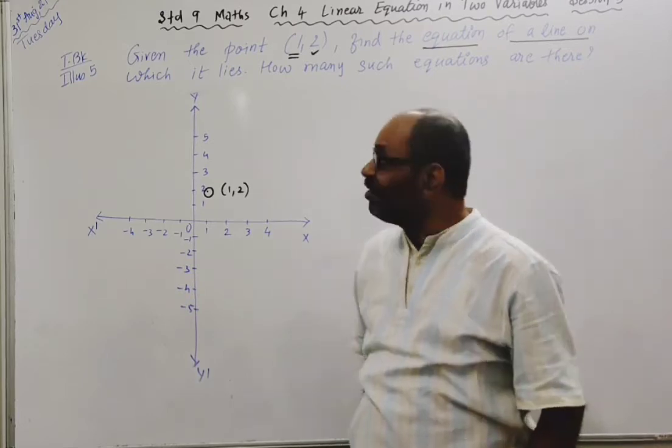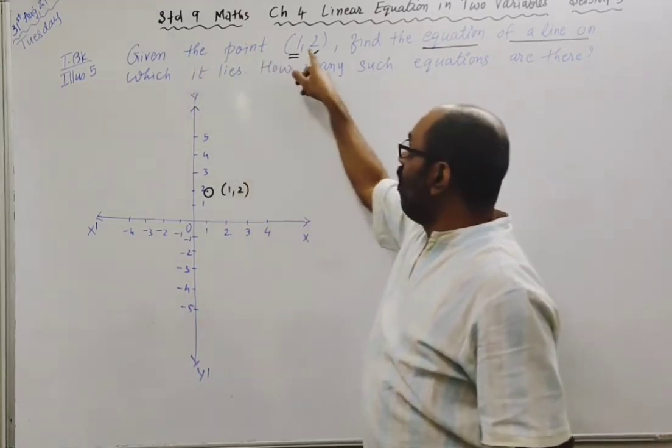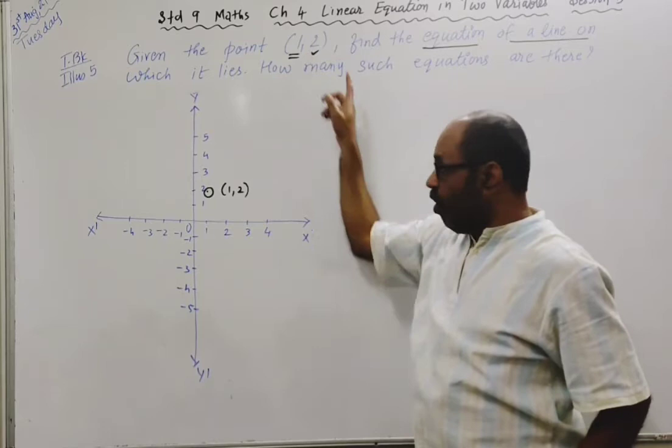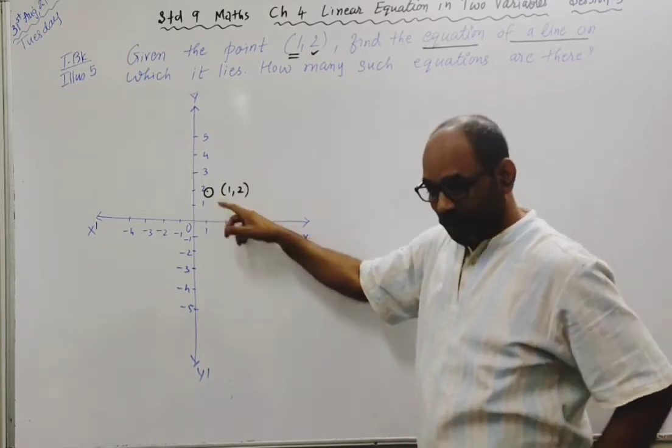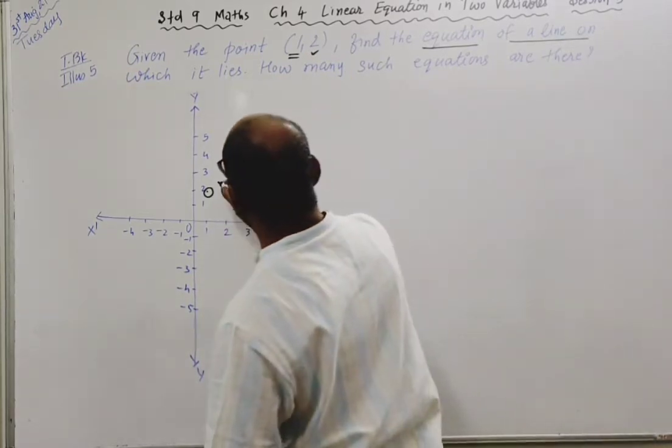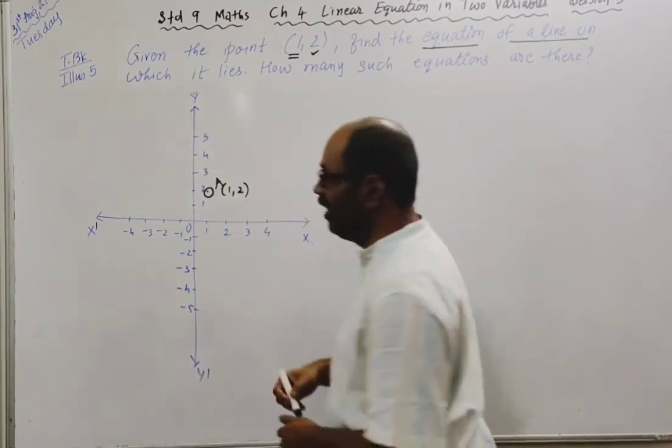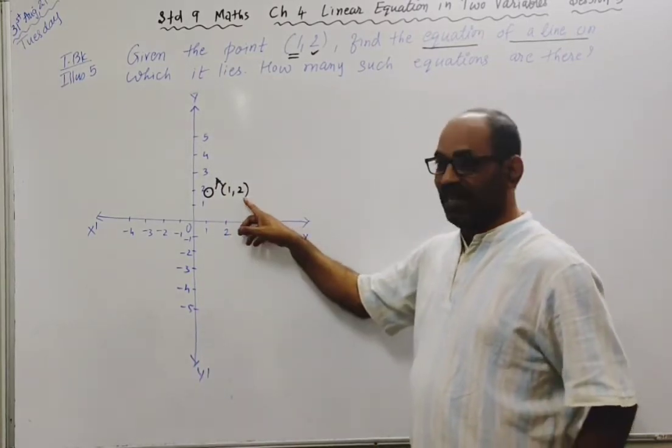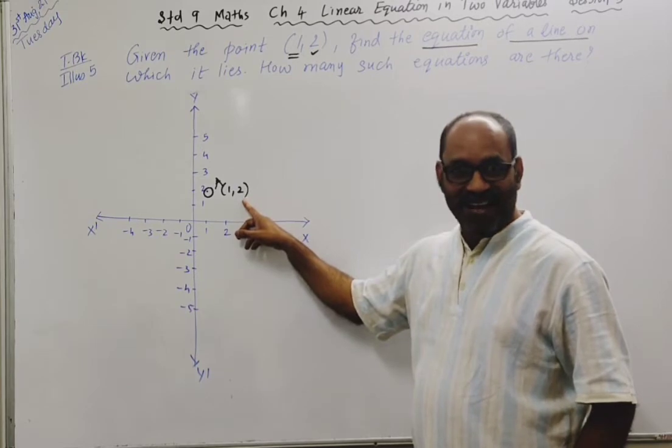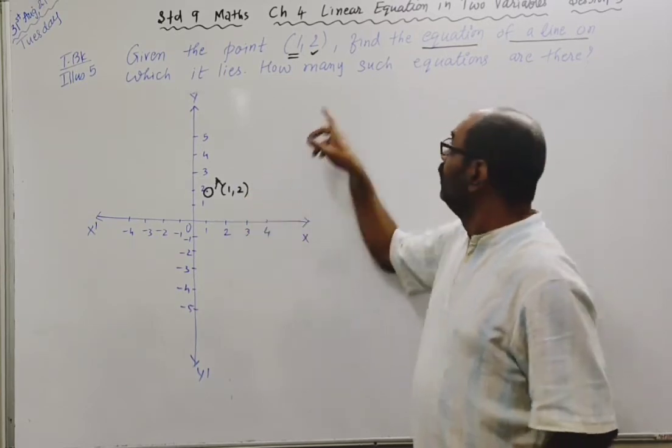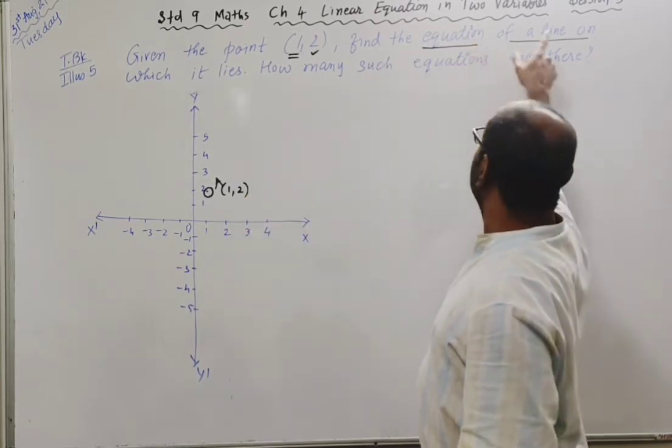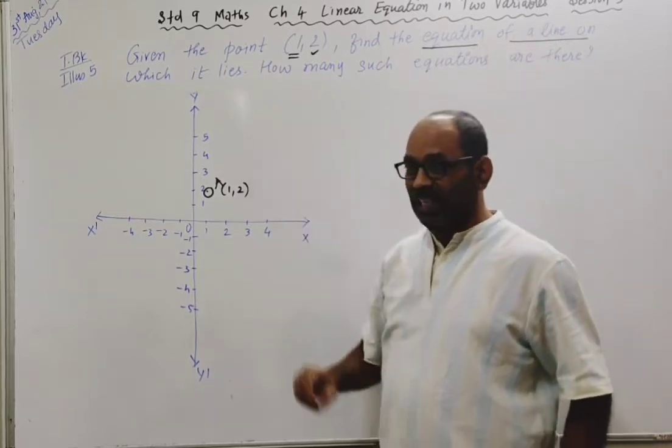Now you will understand the question. Given the point representing ordered pair (1, 2), here is point A, let me call this point A, which is represented by ordered pair (1, 2). Find the equation of line on which it lies.